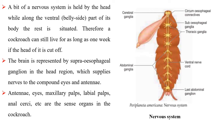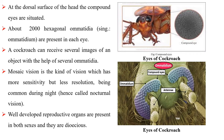Antennae, eyes, maxillary palps, labial palps, anal cerci etc. are the sense organs in the cockroach. The compound eyes are situated at the dorsal surface of the head. About 2,000 hexagonal ommatidia are present in each eye.